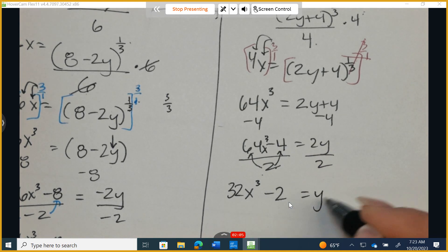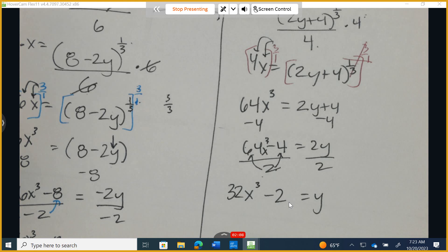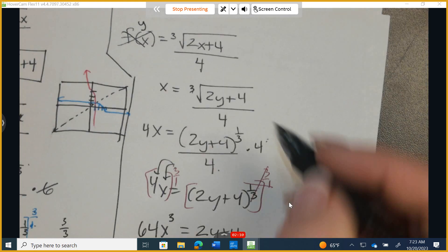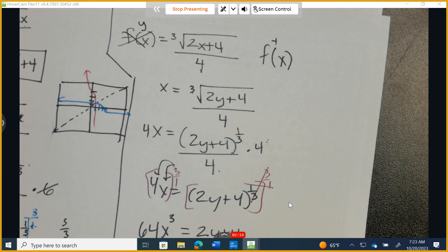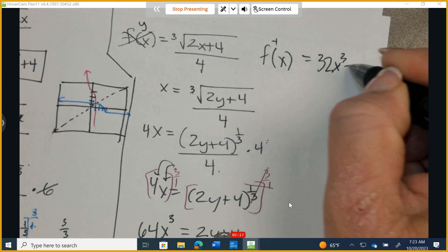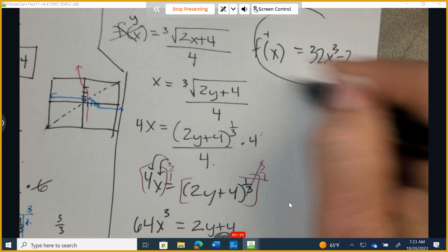And now I have to be able to denote this as the inverse of the original. So I'm going to come up top here and the original was f of x. We denote it as to the negative 1 and now it's 32 x cubed minus 2.